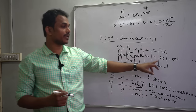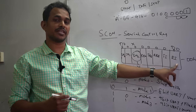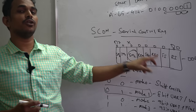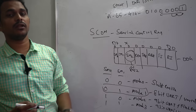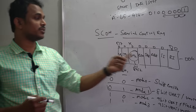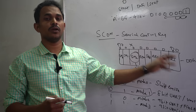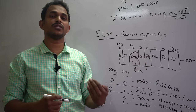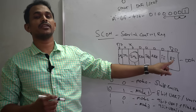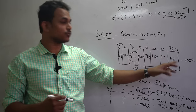TI stands for Transmitter Interrupt and RI stands for Receive Interrupt. Both are logic 0 by default. TI is automatically set to 1 when one byte of data transmission is complete. RI is automatically set to 1 when one byte of data has been received from an external device into the microcontroller. Otherwise, both bits remain 0.